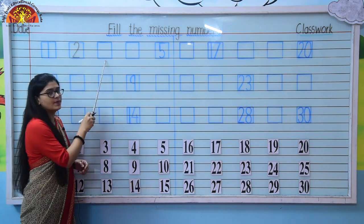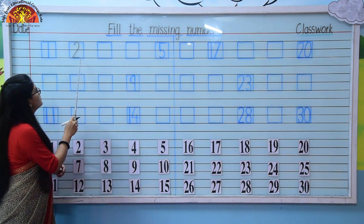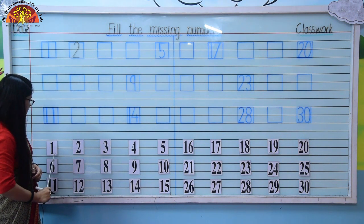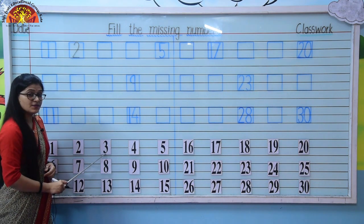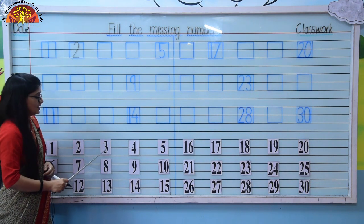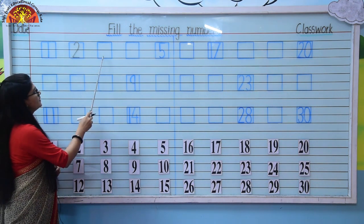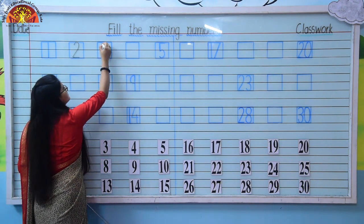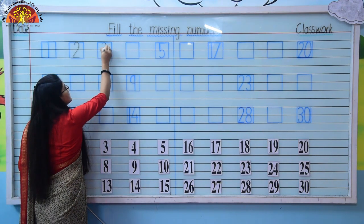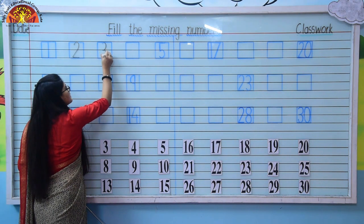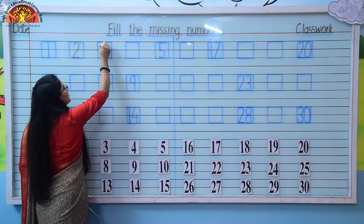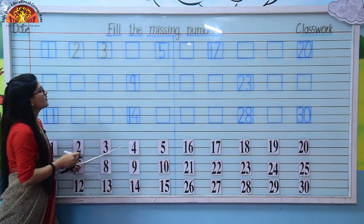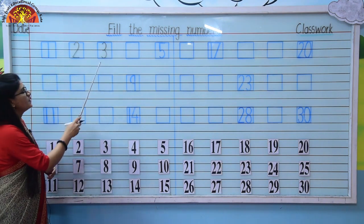Again, one number is missing over here. So which number comes after 2? After 2 — 1, 2, 3 — number 3. So here we will write number 3. Touch the block properly and write kids. Number 3.